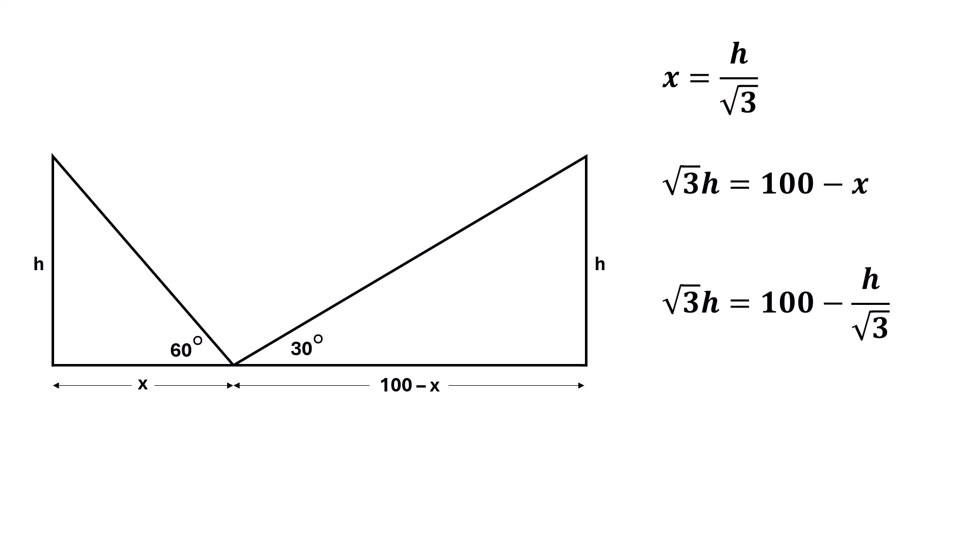Now, multiplying both sides of the equation by square root of 3, we get 3 times h equals 100 times square root of 3 minus h.